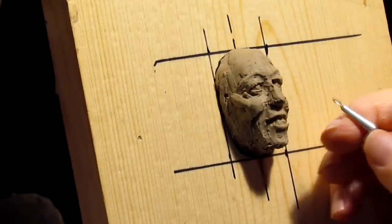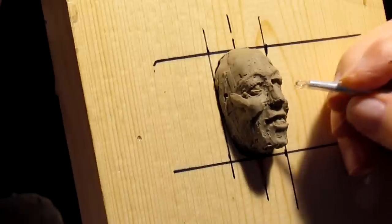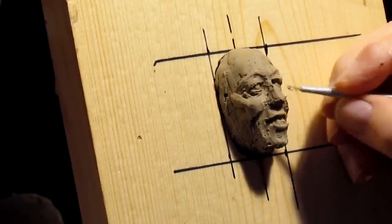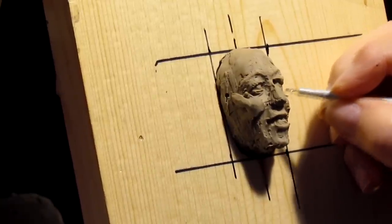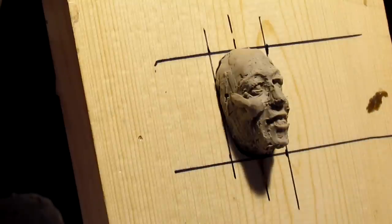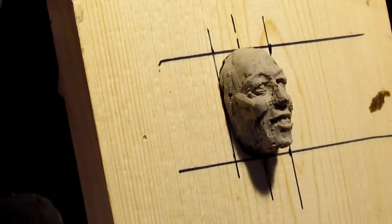The hardest thing about doing this is doing it from photographs instead of the person. Whenever you do pictures or a portrait of somebody that it's supposed to be a surprise for, you have to do it with the pictures you're given, and the pictures weren't taken with sculpting in mind, they were just taken.